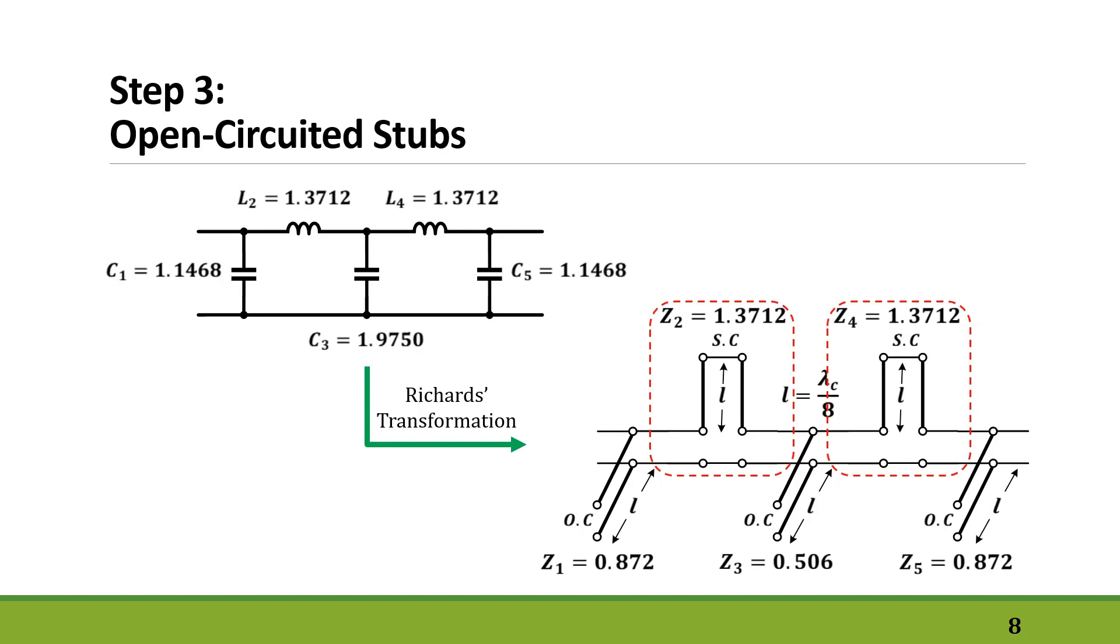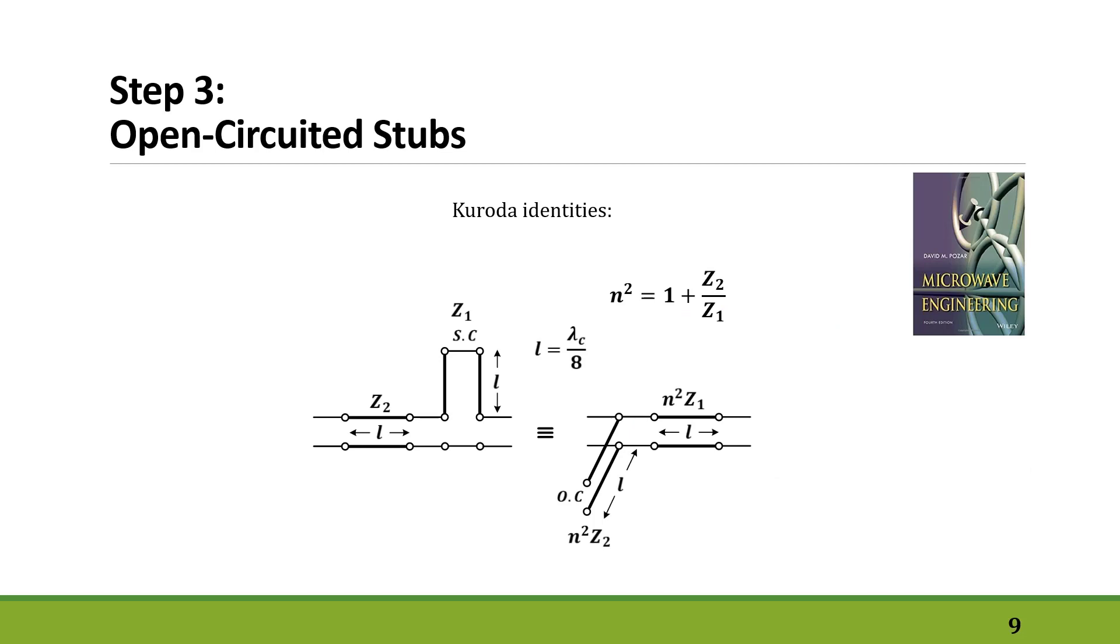The solution is to use Kuroda identities. There are four Kuroda identities which help us to turn capacitors, inductors, and transformers into each other. To turn an inductor to a capacitor, we need a unit element, which is a line with any impedance but with the length of lambda over 8.